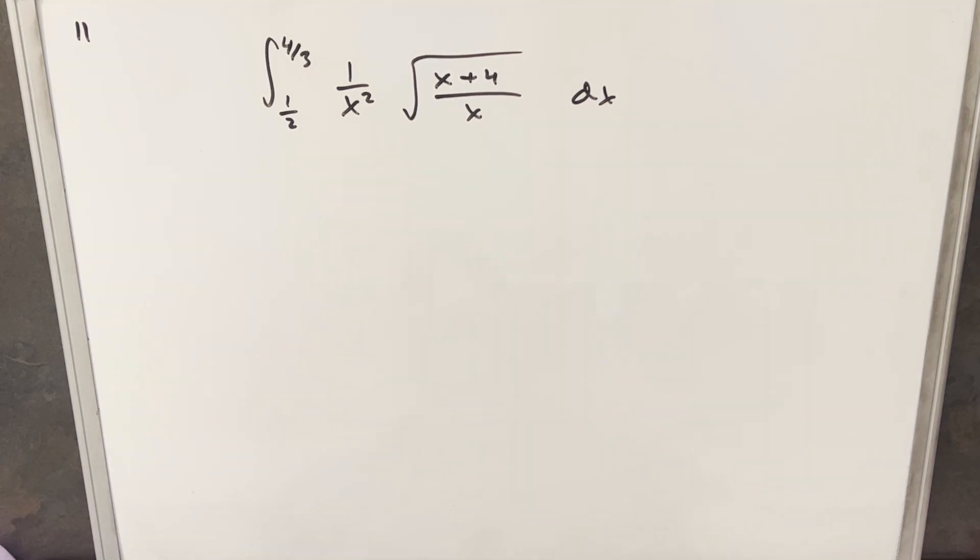We have here problem number 11. We've got the integral from 1 half to 4 thirds of 1 over x squared, square root of x plus 4 over x dx.